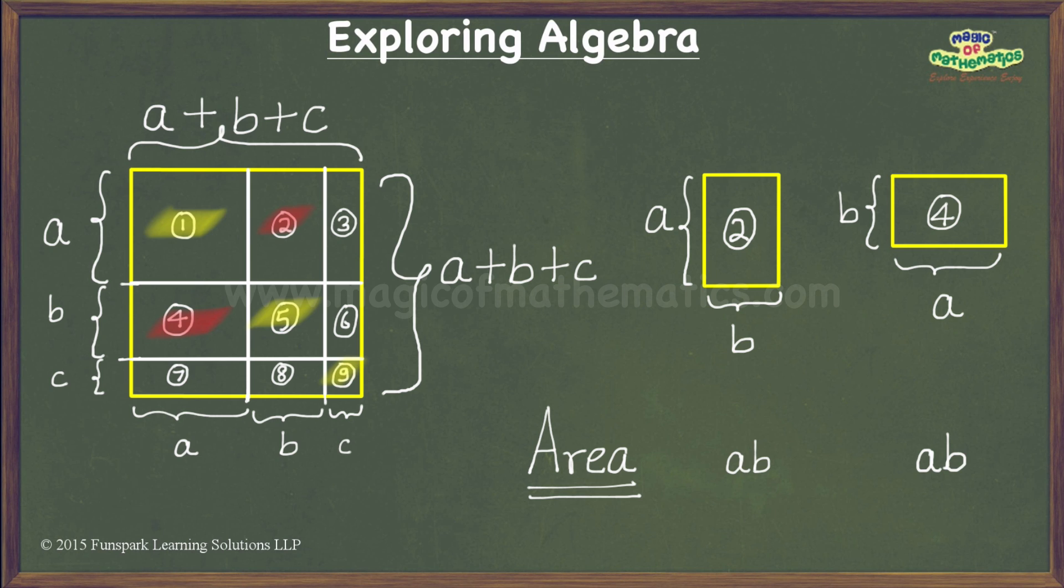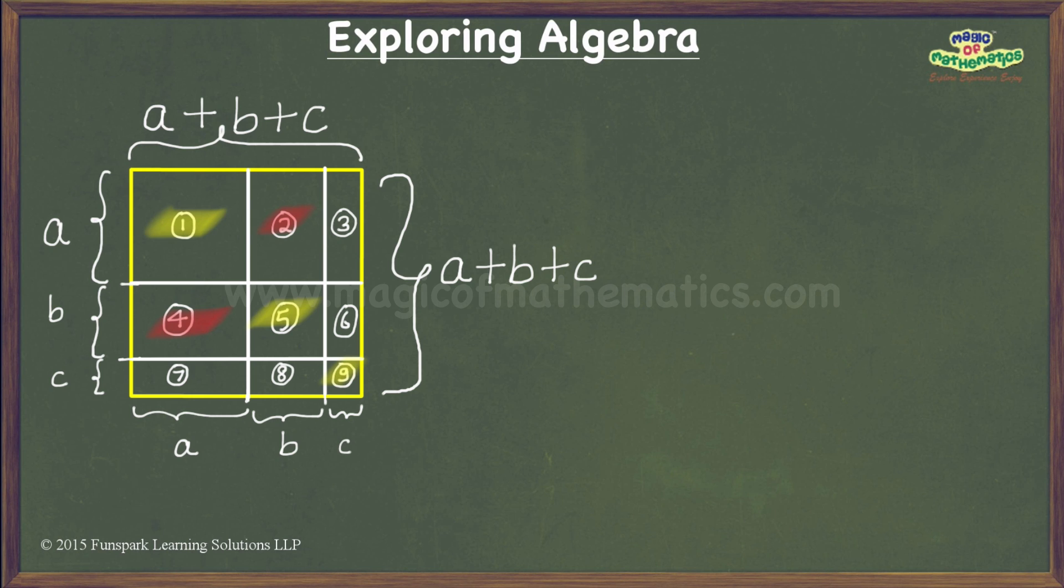We now have four more pieces to go. Let us look at pieces numbered 3 and 7. These are rectangles of dimensions a units by c units each. Hence, their areas are ac square units each.